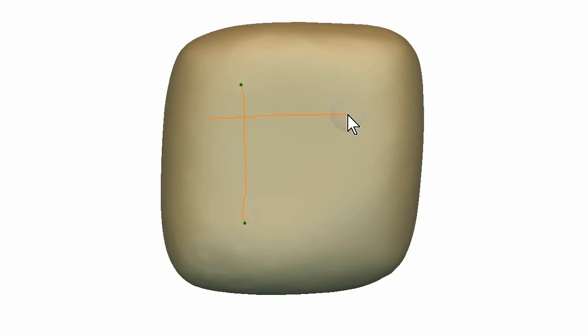The user can sketch curves on the model freely. Curve intersections are marked as corners. When four curves with corners form a loop, the system generates a patch of quadrilaterals.